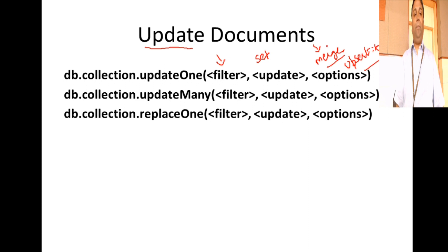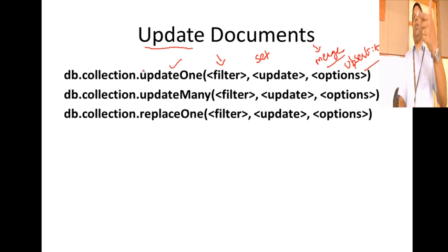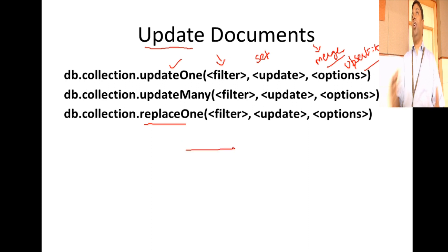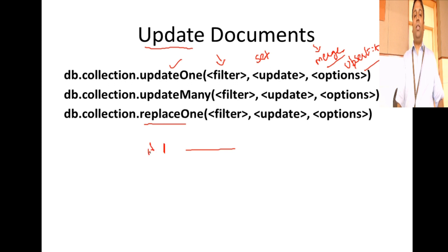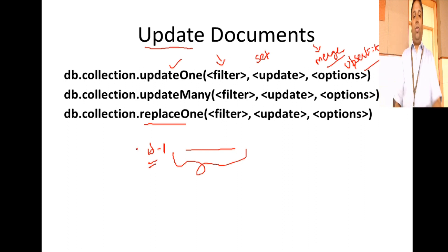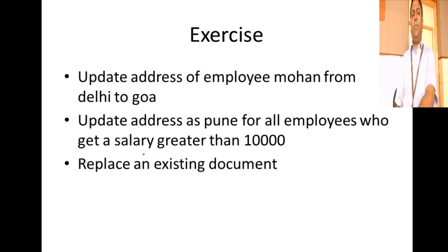We have updateOne, which updates the very first record matching our criteria. updateMany updates all records matching the filter. replaceOne is another interesting method — it finds the first matching record and replaces the entire document content, except the _id which is retained. So if you have a document with id 1 and you replace it, all fields except the id are replaced with the new document.